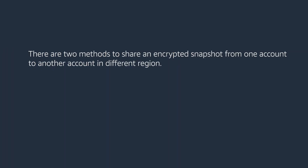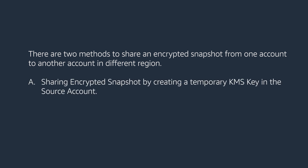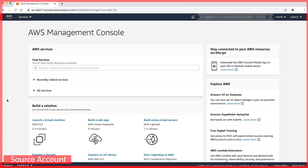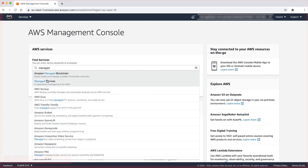There are two methods to share an encrypted snapshot from one account to another account in a different region. Method one is sharing an encrypted snapshot by creating a temporary KMS key in the source account. After all the prerequisites are met, we can start. Step one is to create a temporary customer managed key in the source account and then share it with the destination account. We do this by logging into the source account and then navigating to the AMS console.